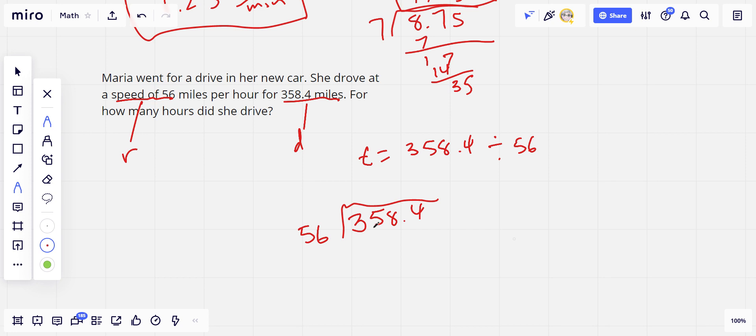Let's see. How many 56s in 35? None. 358? I think there's 6. Let's try that. So 6 times 6 is 36. 6 times 5 is 30, plus 3 is 33. That looks right. And then we'll subtract. 8 minus 6 is 2. 5 minus 3 is 2. So I get 224 there.